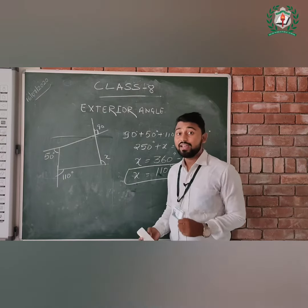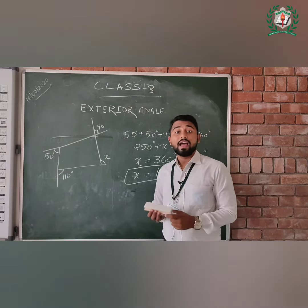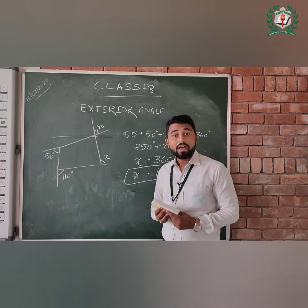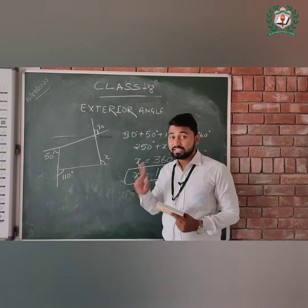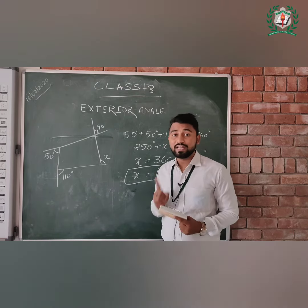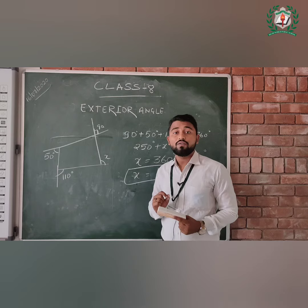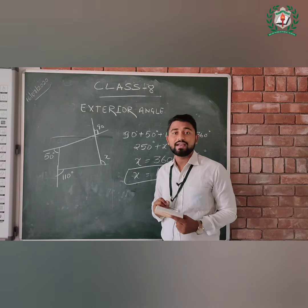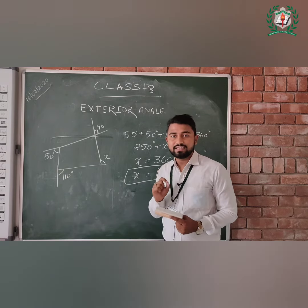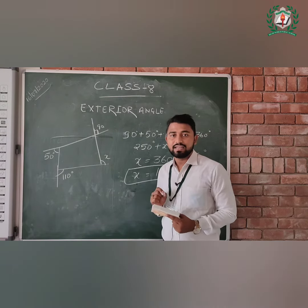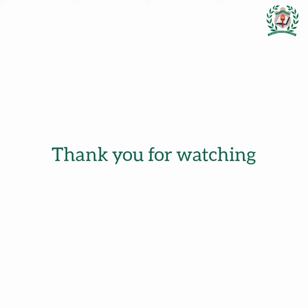Students, take another example and try it at home. Remember that the statement of the exterior angle is: the sum of the exterior angles of a polygon is 360 degrees. Bye bye.